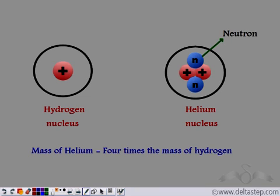These two neutrons make the mass of the helium nucleus four times the mass of hydrogen. Since the mass of a neutron equals the mass of a proton, and the hydrogen nucleus has only one proton, these four particles — two protons and two neutrons — make the mass of helium four times the mass of hydrogen. This is how neutrons were discovered.